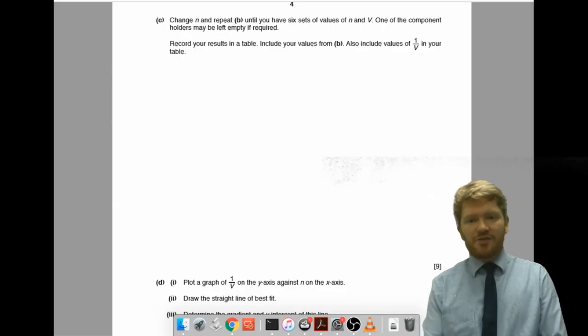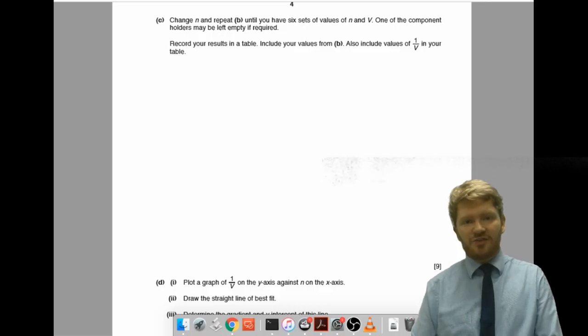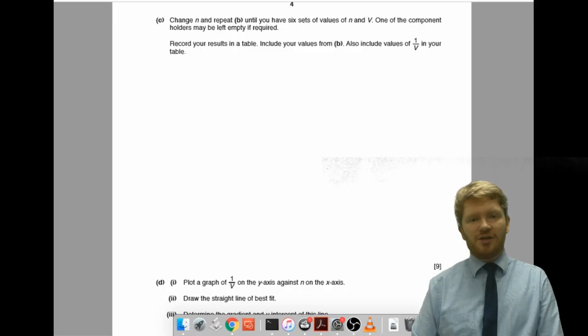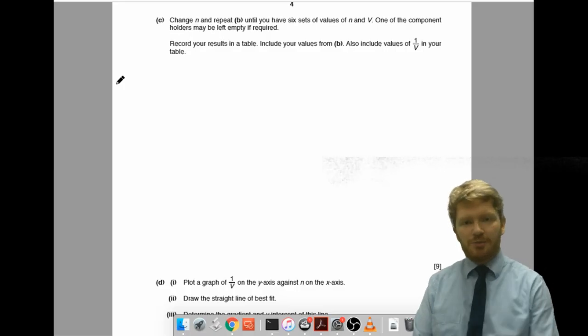Okay. So, now, again, classic thing. I'm going to be asked to change N and repeat B until you have six sets of values for N and V. One of the component holders may be left empty if required. Record your results in a table. Include your values from B. Also, include the values of 1 over V in your table.